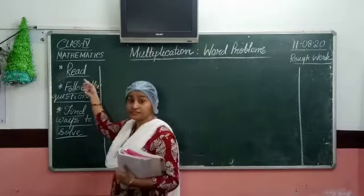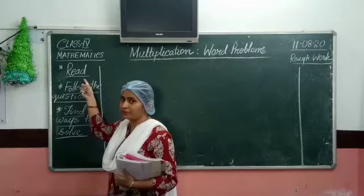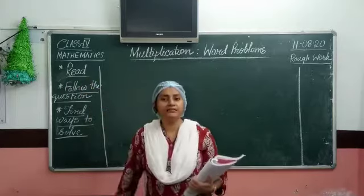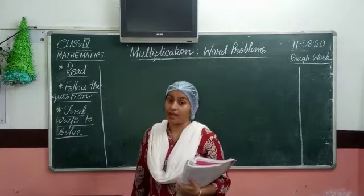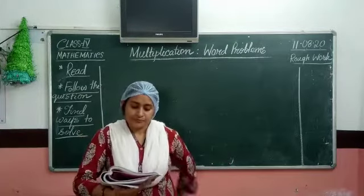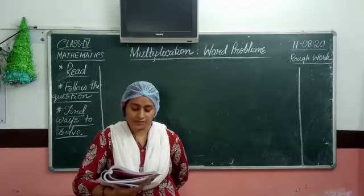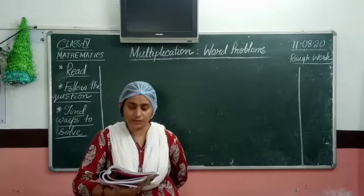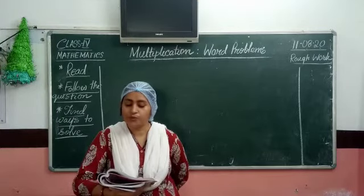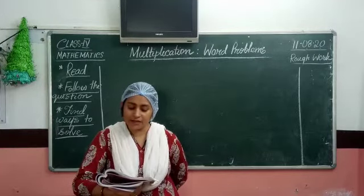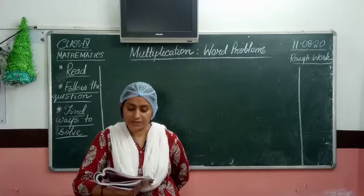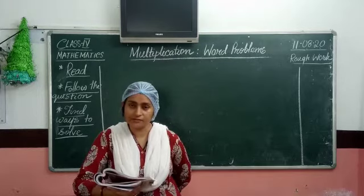So what was our first basic step? My first step was: read the sum given to you thoroughly and repeatedly. So I am reading out the sum. A machine manufactures 845 screws in a day. How many screws will it manufacture from the beginning of the year till the end of August, and the year given is 2016?